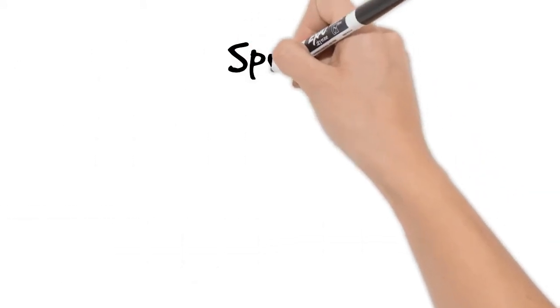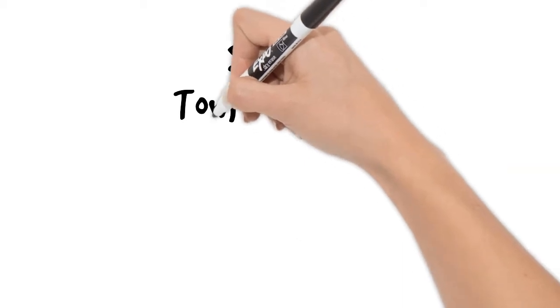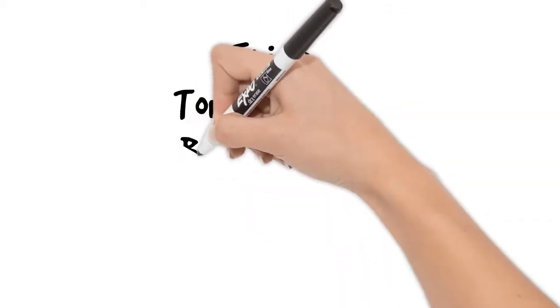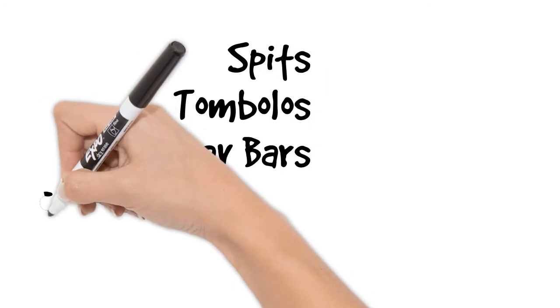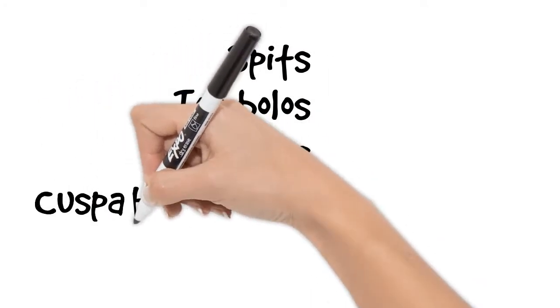So in this video we're going to look at four different features: Spits, Tombolos, Bay bars, and Cuspate Forelands.